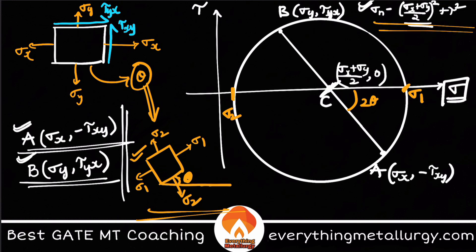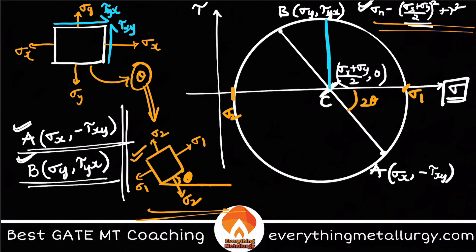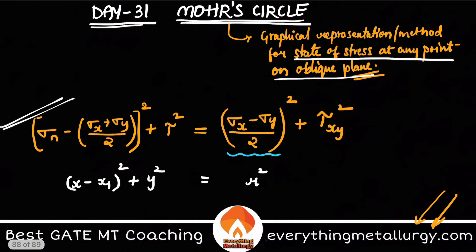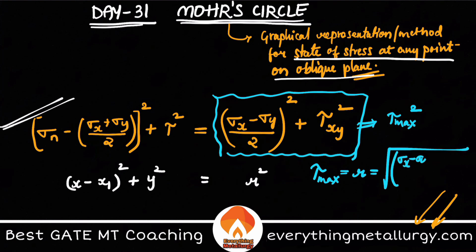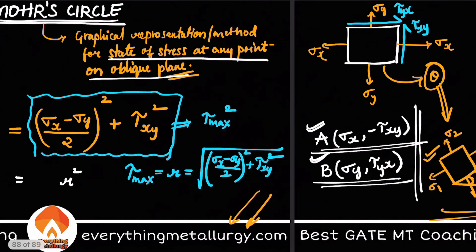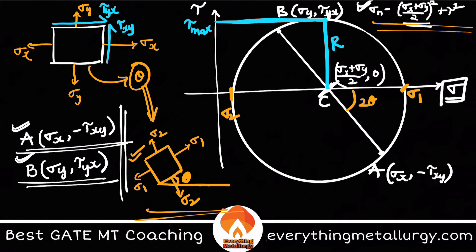Another key quantity is the radius of the Mohr's Circle. The radius R equals τmax, the maximum shear stress. So R = τmax = √[((σx − σy)/2)² + τxy²]. You can directly get the maximum shear stress value by simply measuring the radius of the circle.